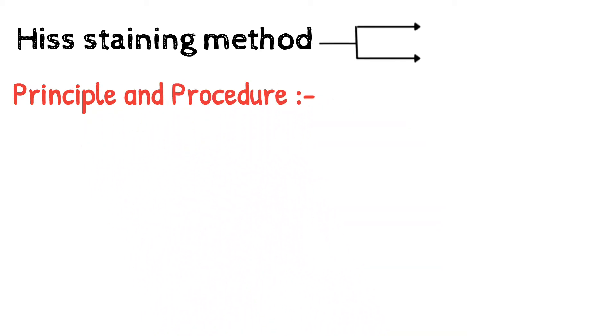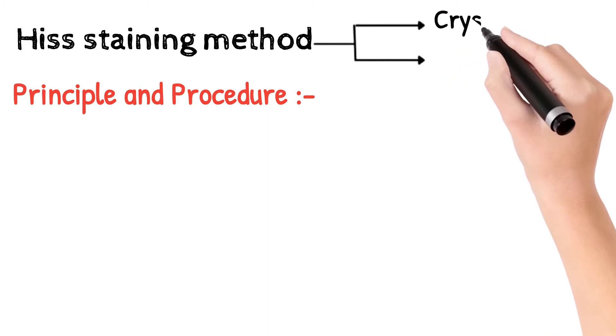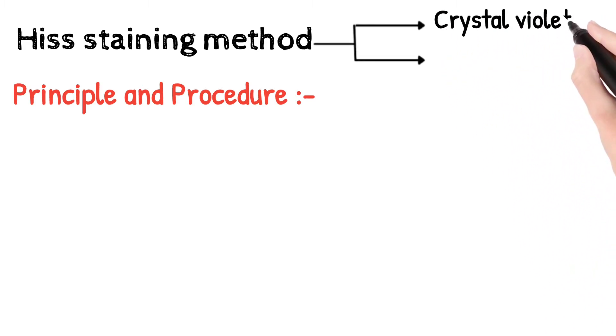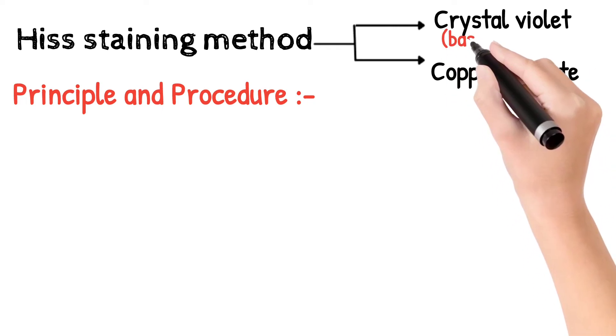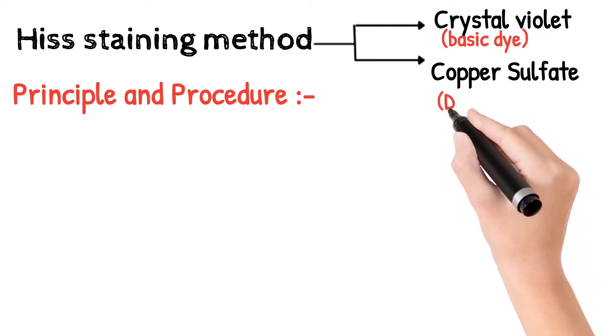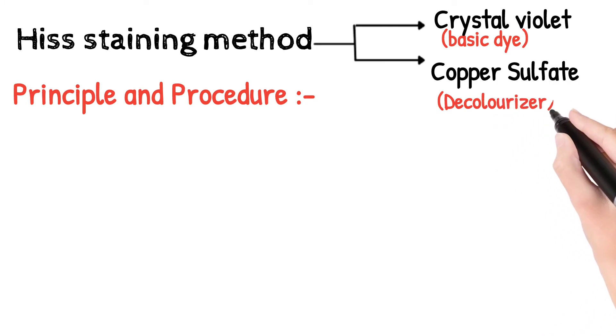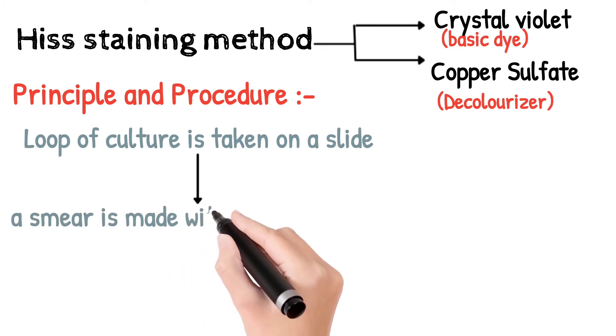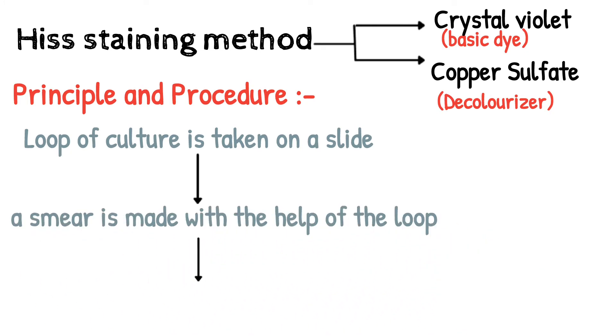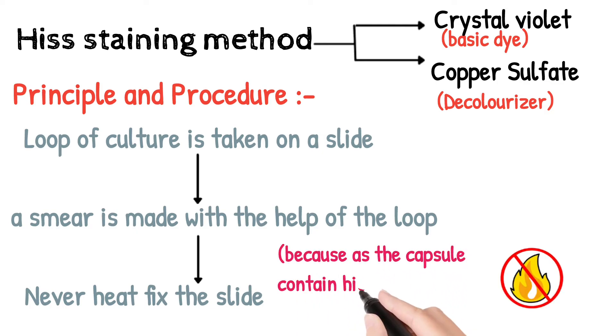Now I will discuss the principle along with the procedure. In this method, two reagents are used: crystal violet and copper sulfate. Crystal violet is a basic dye, whereas copper sulfate is a decolorizer. A loopful of culture is taken on a clean slide and a smear is made. Remember, never heat-fix this slide during capsule staining because capsules contain high water content, and the structure may be denatured.